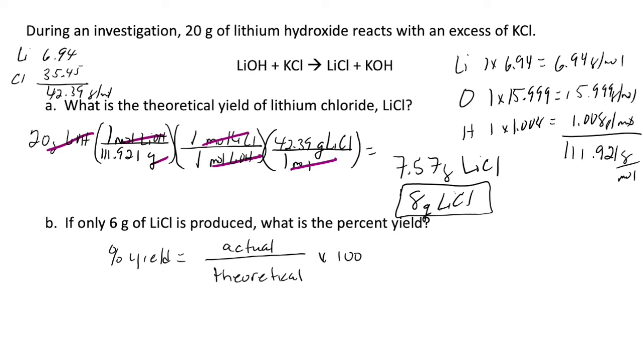Now that we have the theoretical yield and the actual yield, we just take these numbers and plug it into the equation. So we'll have 6 grams over the theoretical yield times 100, which is 75%.